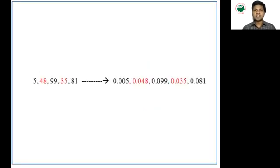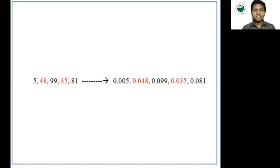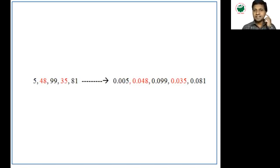Now see one example to get the idea about data transformation. Throughout the world we may use a data format like 0.005 or 0.048. But in a database, some data entry operators may enter just 5 or 48 as-is. As per the world format, that should be 0.005. So what data transformation does is: if 5 is converted into 0.005, that's the correct format. That's the reason the definition states data transformation is a process of converting integrated data into the correct format.